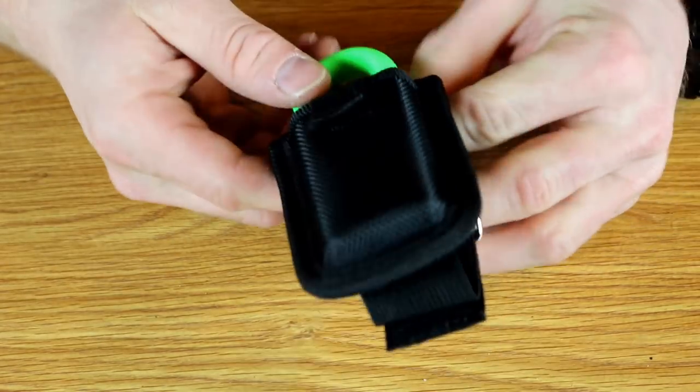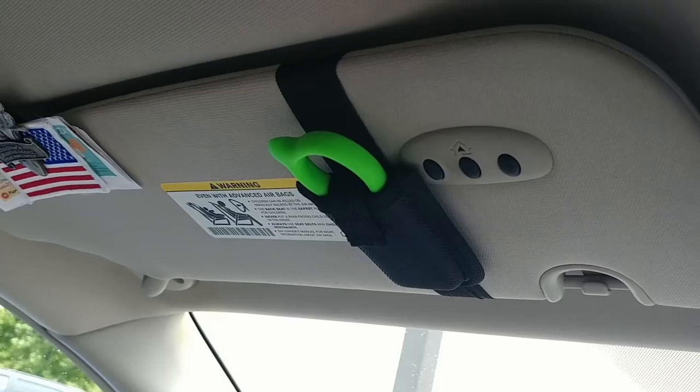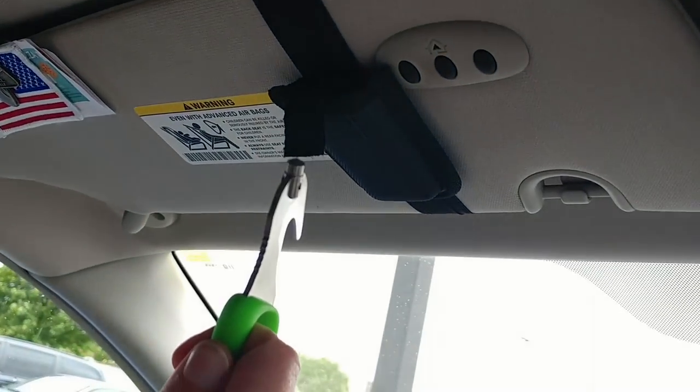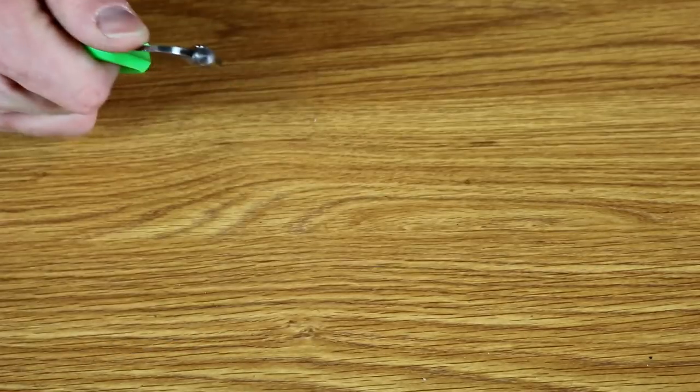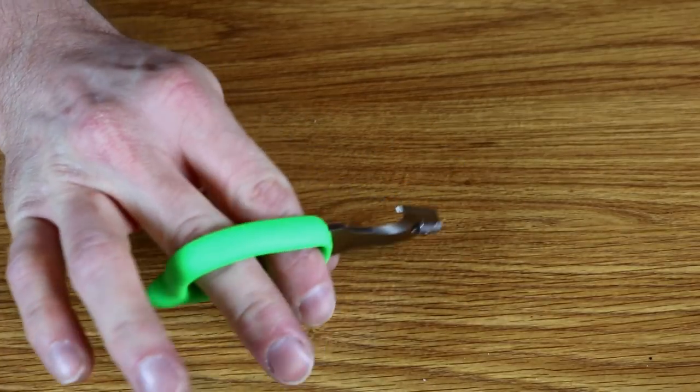So the idea is you're supposed to get one of these, put them on the sun visor, and then if you get trapped in the car, it rips right out of the sheath because it's just held in there with Velcro and you can cut yourself out of your seatbelt if you have to and you can punch the window and bust the glass out if you have to.